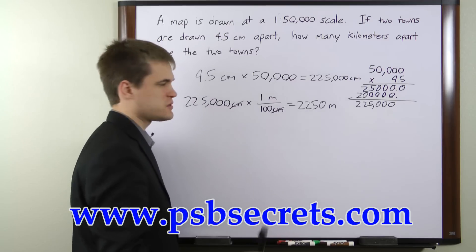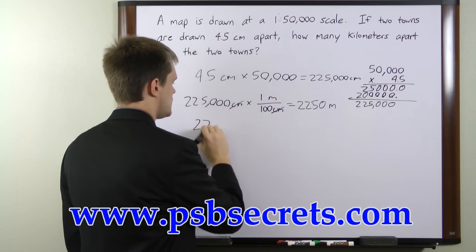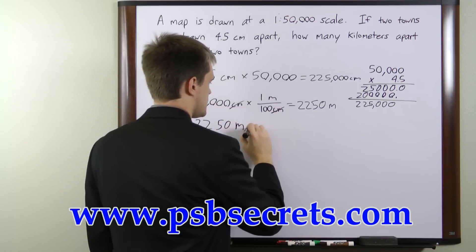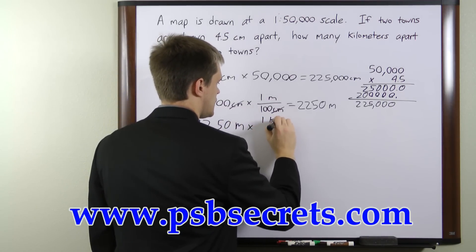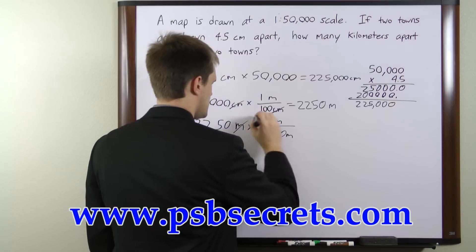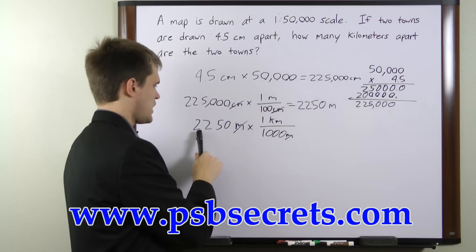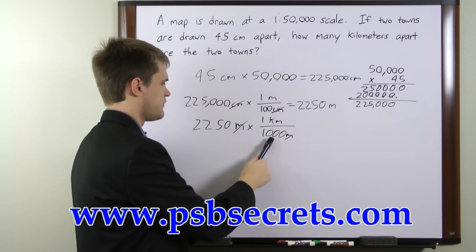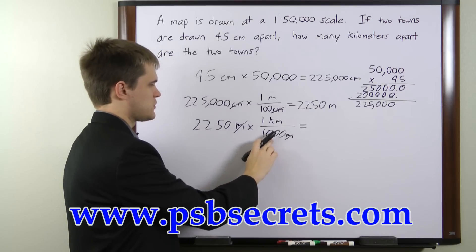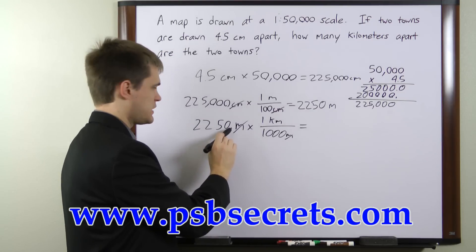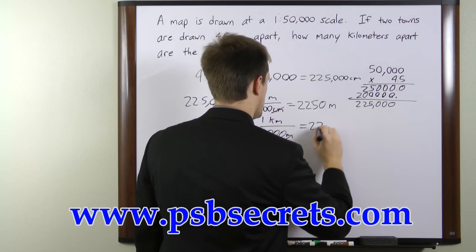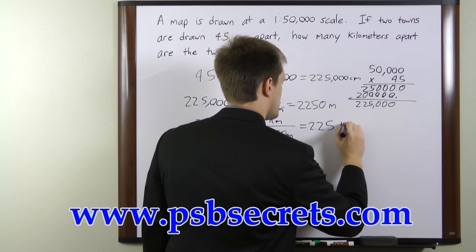Now we need to convert our meters into kilometers: 2,250 meters times 1 kilometer per 1,000 meters. The meters cancel, and we have 2,250 divided by 1,000. We have three zeros, so we move our decimal point three places to the left, and that gives us 2.25 kilometers.